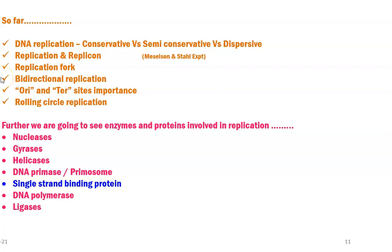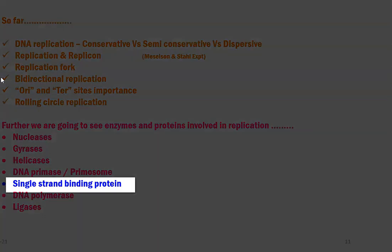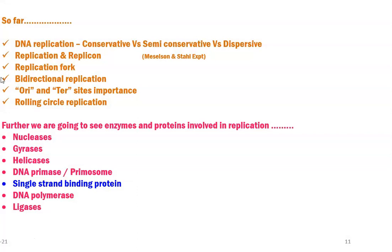In this lecture, we are going to see what are the enzymes and proteins involved in replication. There is only a single protein — the single-strand binding protein — while various enzymes are involved in the process, which include nucleases, gyrases, helicases, DNA primase that results in the formation of the primosome, DNA polymerase, and finally ligase.